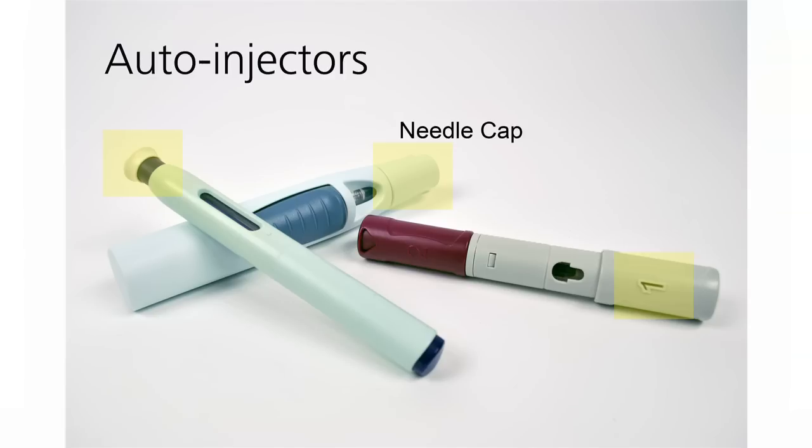Each auto-injector has three basic parts: a needle cap, a medication window which shows the medicine, and an activator button.